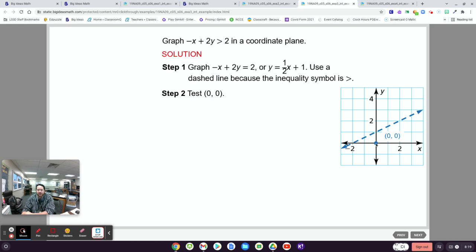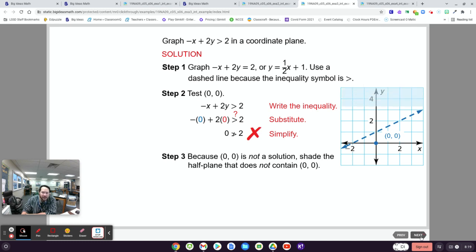And then you can plug in a point like 0, 0 and see if it works or not. And if you plug it in and it's true in this thing, then you'll shade down here where 0, 0 is. If you plug 0, 0 in and it's false, you shade above the line. So when you plug in 0, 0, you get 0 is greater than 2. That's not true. Therefore, this point down here isn't a solution, which means all these points up here have to be solutions. So therefore, the top of this line will be shaded. Okay. So take a look at that. Make sure that makes sense.